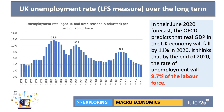But forecasts for the labour market have become very gloomy indeed in recent weeks. The latest OECD forecast, which came out in June, pretty much matches what the IMF have said. They predict that real GDP in the UK will fall by over 10% in 2020 and that by the end of 2020, the rate of unemployment will be 9.7% of the labour force — essentially heading back up to the levels last seen in the early 1990s.